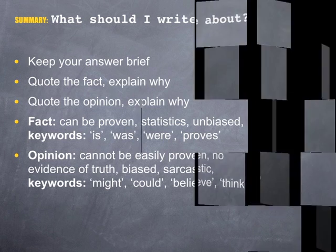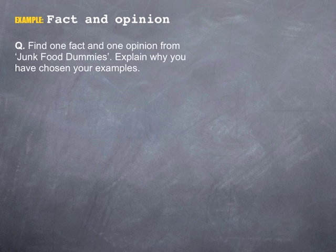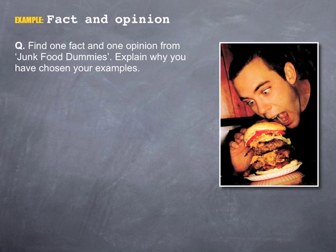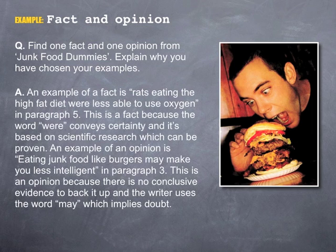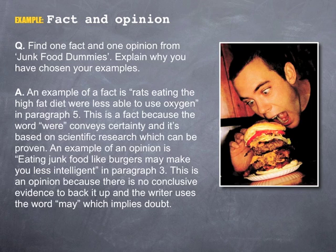We'll finish by looking at an example question and an exemplar answer. Question: Find one fact and one opinion from 'Junk Food Dummies.' Explain why you've chosen your examples. Answer: An example of a fact is 'rats eating the high fat diet were less able to use oxygen' in paragraph 5. This is a fact because the word 'were' conveys certainty and it's based on scientific research which can be proven. An example of an opinion is 'eating junk food like burgers may make you less intelligent.' This is an opinion because there's no conclusive evidence to back it up and the writer uses the word 'may,' which implies doubt.